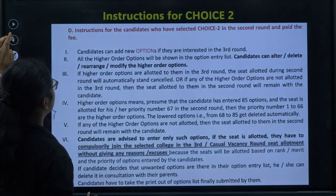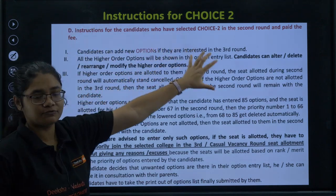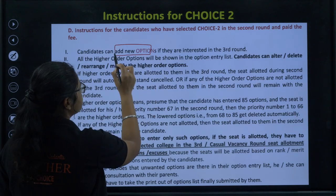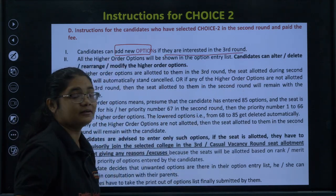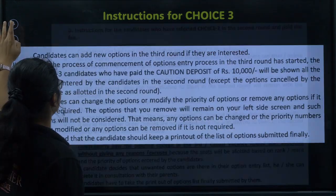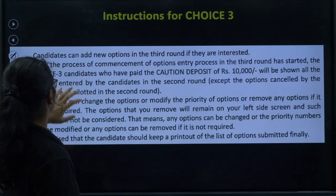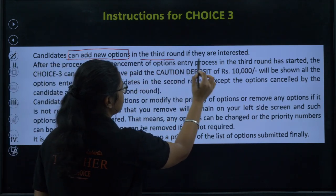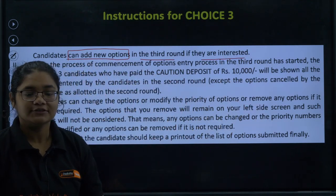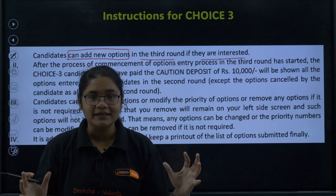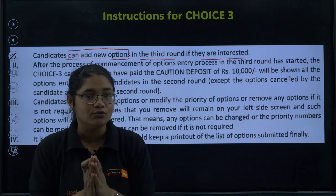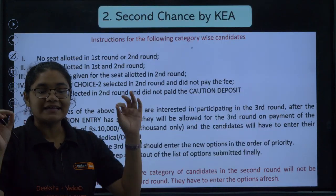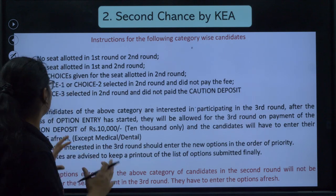It is clearly written that you can add new options in your option entry. In the special instructions for Choice 2, candidates can add new options if they are interested in the third round. Similarly, for Choice 3 candidates, they can also add new options in the third round. So it is very clear that all candidates can add new options to their option entry list.